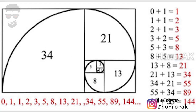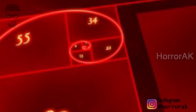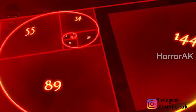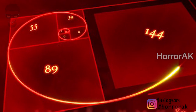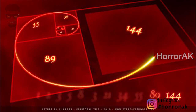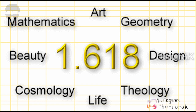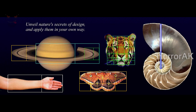So 1 plus 1 equals 2, 2 plus 1 equals 3. The Fibonacci sequence is 0, 1, 1, 2, 3, 5, 8, 13. Fibonacci numbers are 1, 1, 2, 3, 5, 8, 13.